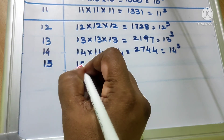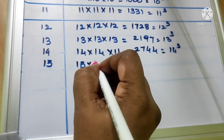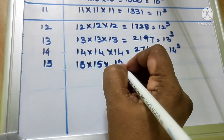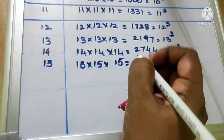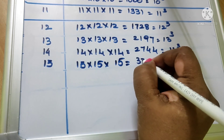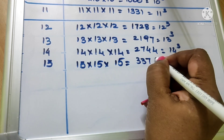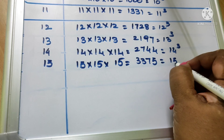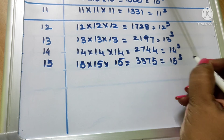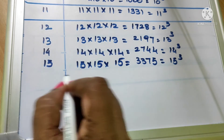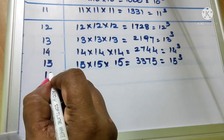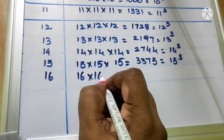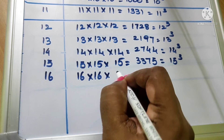15. 15 into 15 into 15 equal to 3375. We write as 15 cube.